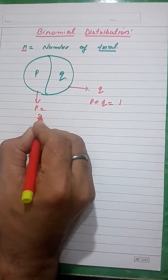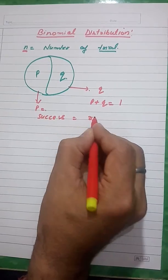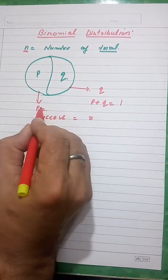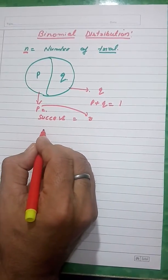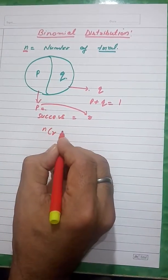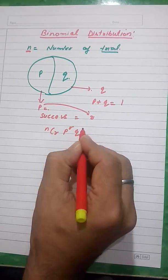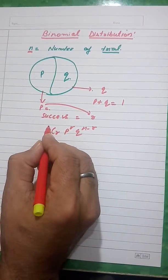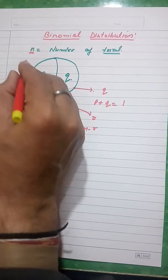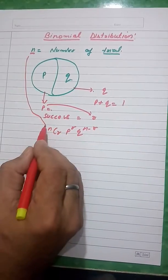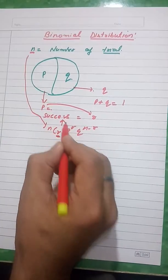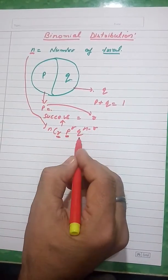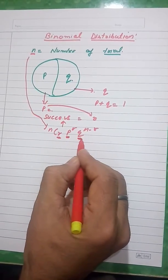Out of n trials, you want success R times. Always connect R with P. According to the binomial theorem, the formula is nCr · p^r · q^(n-r), where n is the number of trials, R is how many successes we want, P is the probability of success, and Q is the probability of failure.